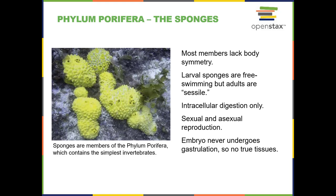Like many animals, sponges have sexual reproduction — some sponges make eggs, some make sperm. They also have asexual reproduction. In sponges, that means if a fragment breaks off of a larger sponge, it can land somewhere else, attach, grow, and become its own sponge.